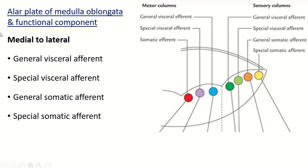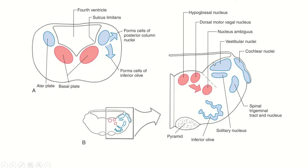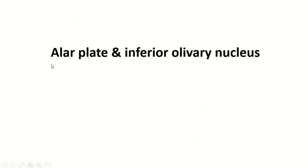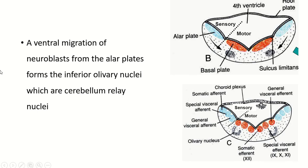The lateral nuclei are the nuclei of the medulla oblongata. According to their functional components, from lateral to medial: general visceral afferent, special visceral afferent, general somatic afferent, and special somatic afferent. The alar plate forms the cochlear nuclei and vestibular nuclei, and also the inferior olivary nucleus — some newly formed neuroblasts leave the alar plate and migrate ventrally to form the inferior olivary nucleus.